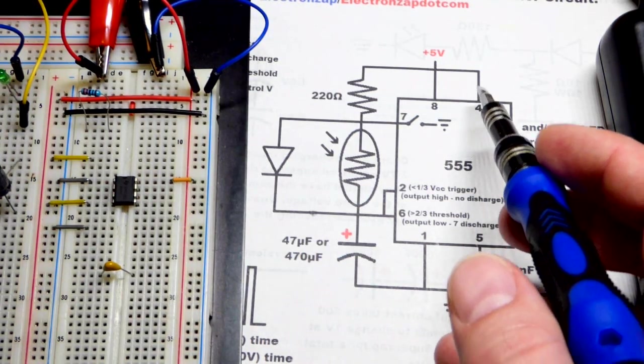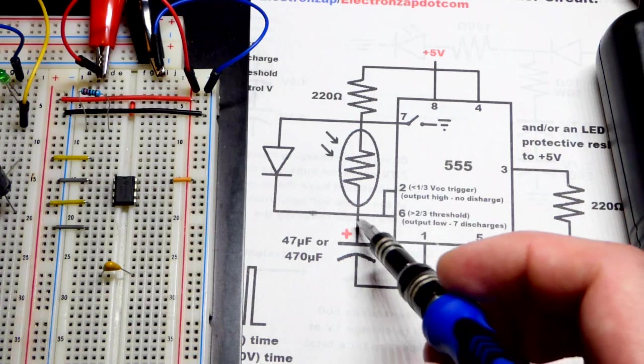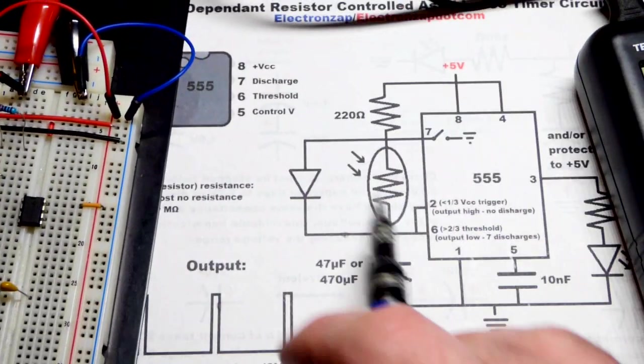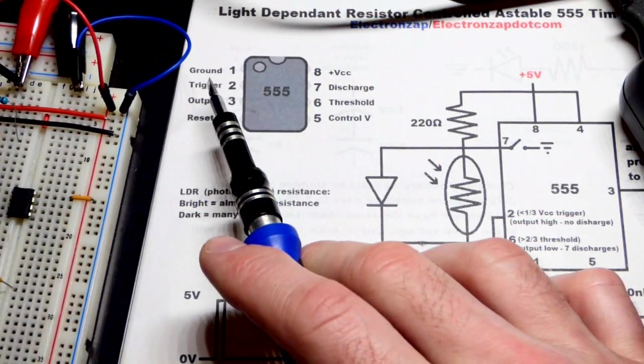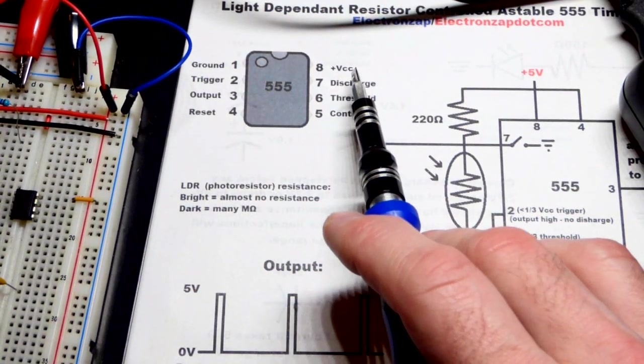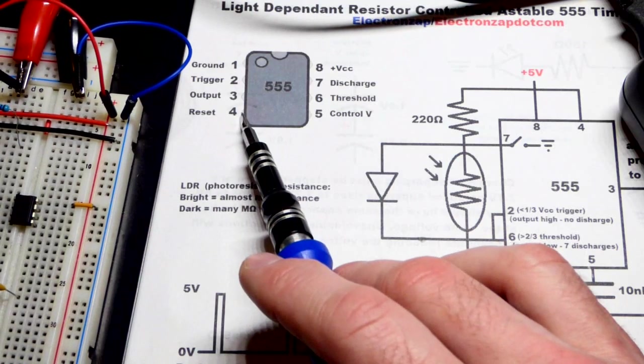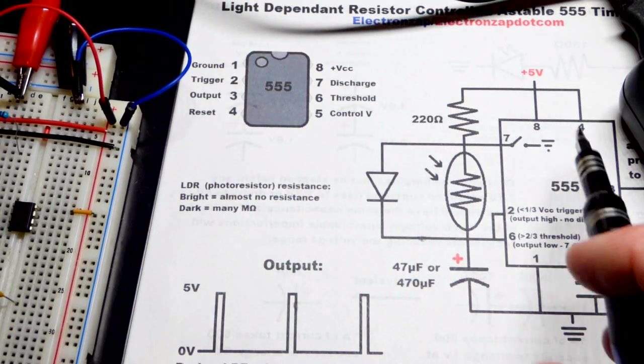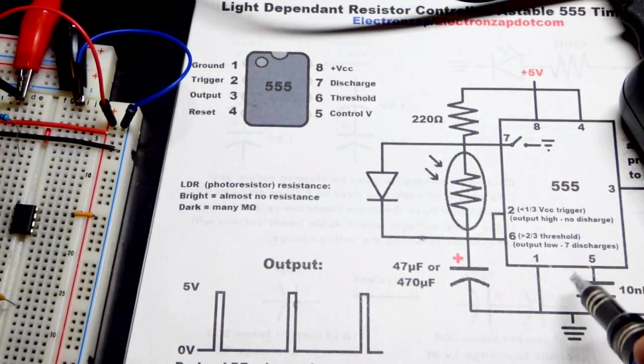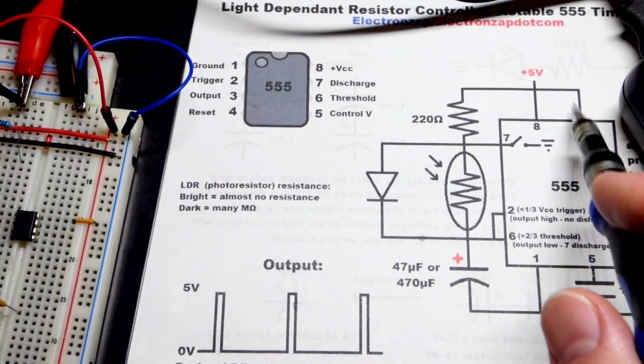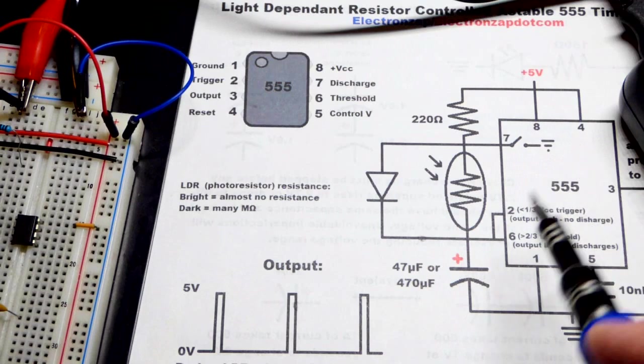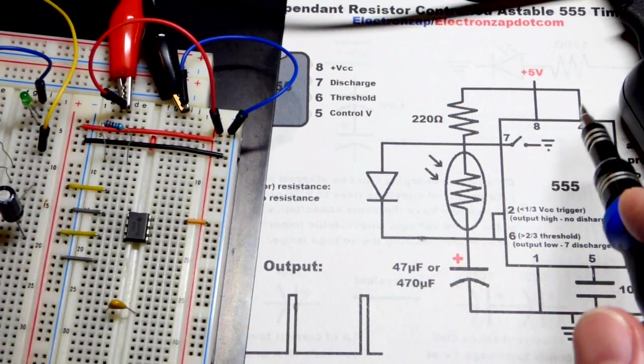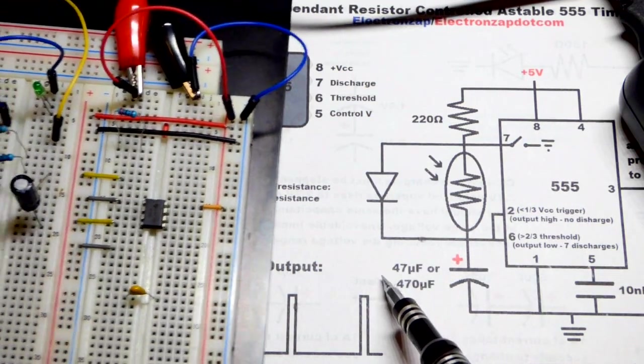So pin four, that's the reset pin. Our ground pin one, the positive pin there. Pin four is the reset pin. We don't want it to do anything. It's waiting for a low signal. So if we put it to the positive rail, it will never get a low signal. It will never do anything. And that's what we want in this circuit for that.